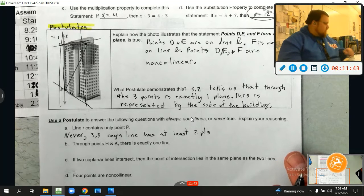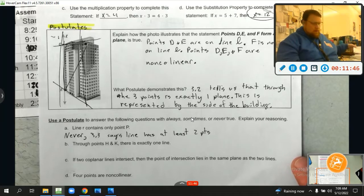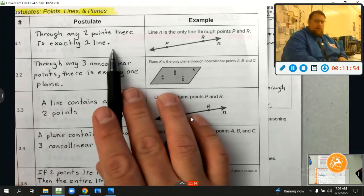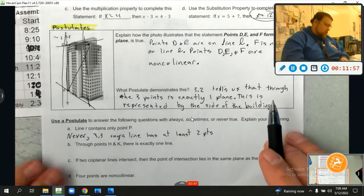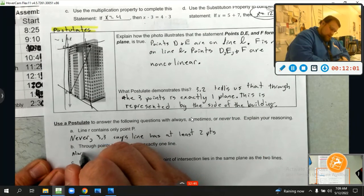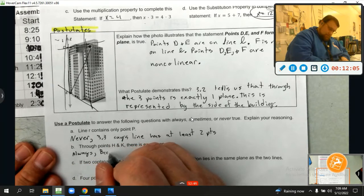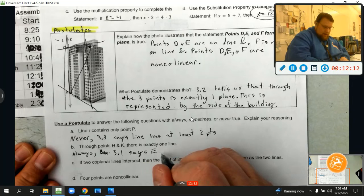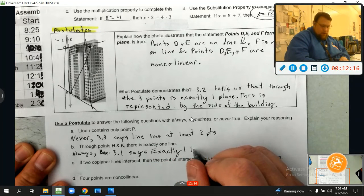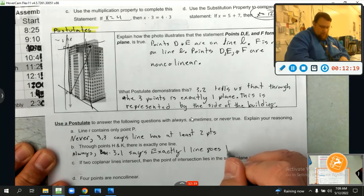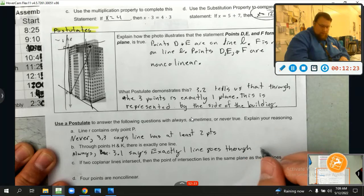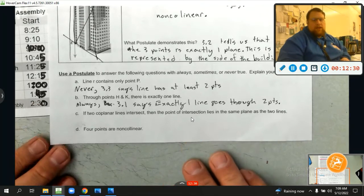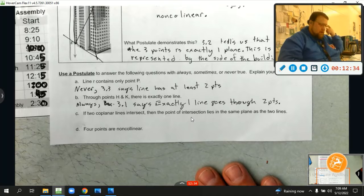And we know that because 3.3 says a line has at least two points. All right. Through points H and K, there's exactly one line. Well, let's see. Let's go back to our list right here. Look at 3.1. Through any two points, there's exactly one line. That is always true because of 3.1. So, always, and why? Well, let me say because 3.1 says exactly one line goes through two points. All right. Take a minute. See if you can do C and D, and then we're just going to take a look at them. Ready, set, go.